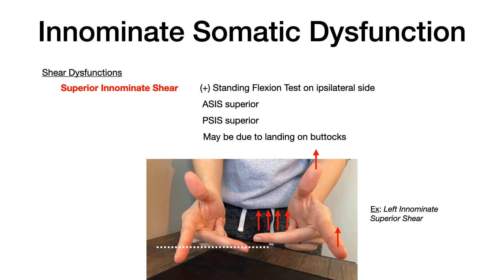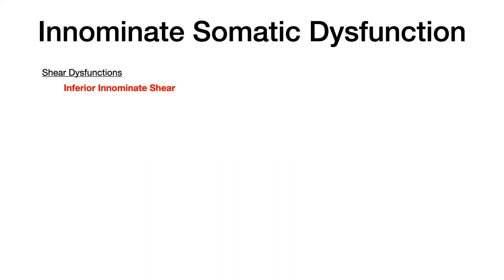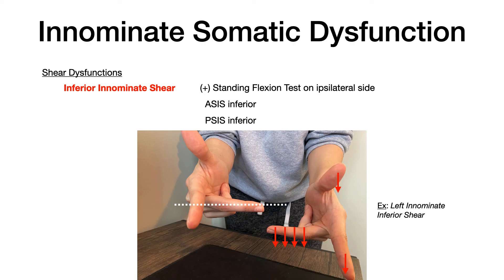An inferior innominate shear is the opposite — everything moves inferiorly. In a left inferior shear, the standing flexion test is positive on the left. The ASIS (pointer finger) is inferior, and the PSIS (thumb) is also inferior. The left side drops down while the right side remains at the neutral plane.